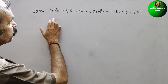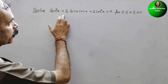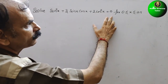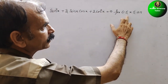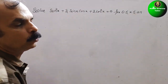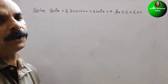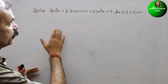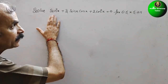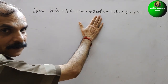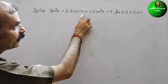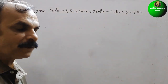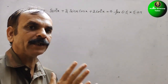The question is: solve sin²x + 3sinx·cosx + 2cos²x = 0, for 0 ≤ x ≤ 2π. Here we have sin²x and cos²x, and in the center a mixture of sin and cos. That means this is nothing but a quadratic equation.